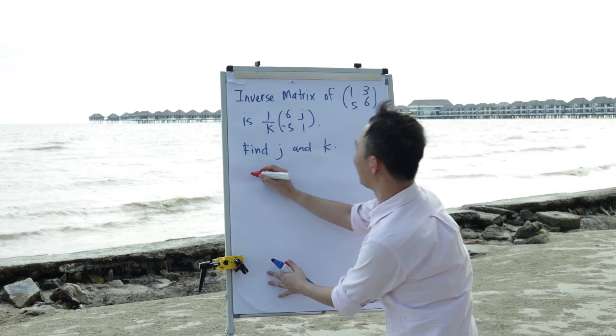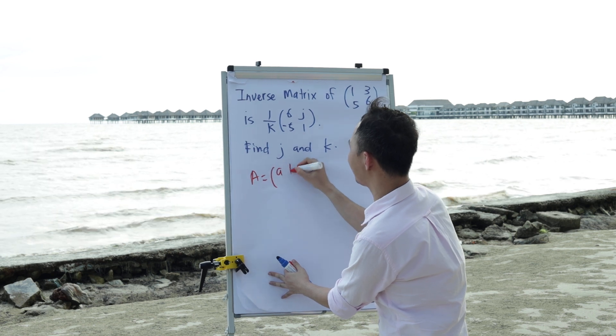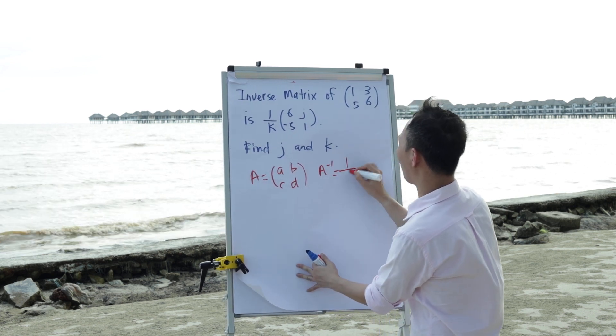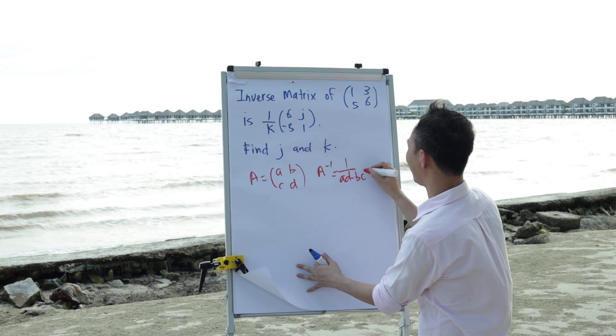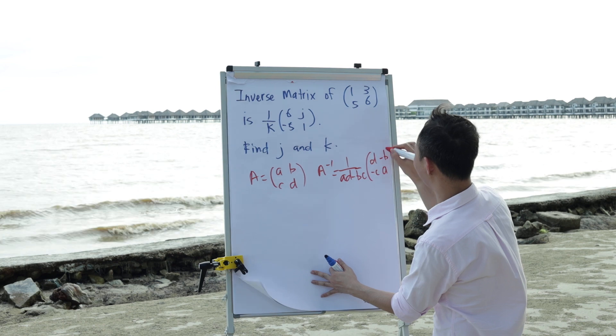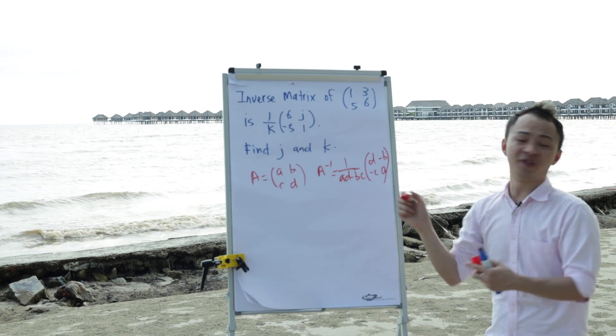The inverse matrix formula is like this. If A equals [[a,b],[c,d]], then A inverse will equal to 1 over (ad minus bc), and then d and a will swap places, b and c will add a negative. So this is the formula for inverse matrix.